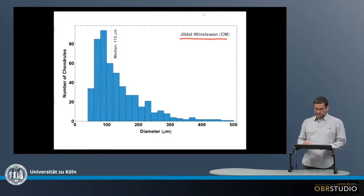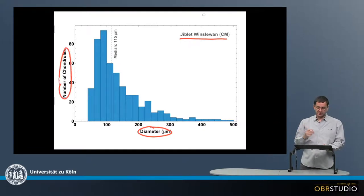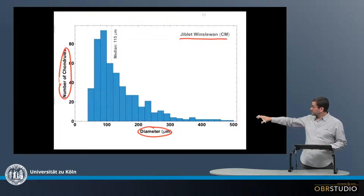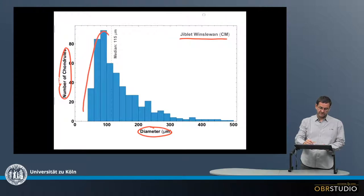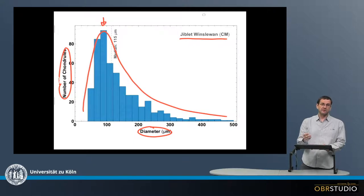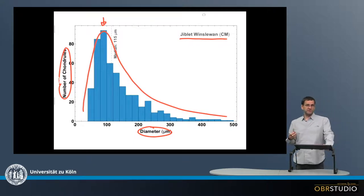On the x-axis is the diameter of the chondrules, and on the y-axis the number of chondrules with a certain diameter. There is the chondrule size distribution, and in this case this is quite a nice distribution, about log-normal distribution, and it is a unimodal distribution, which means it only has one peak and not a couple of peaks.